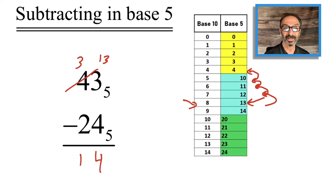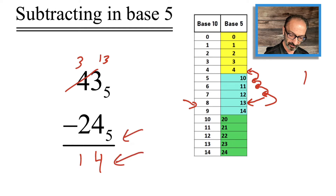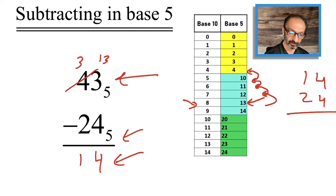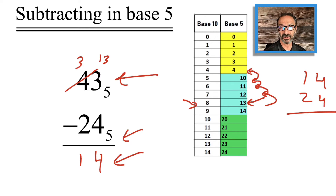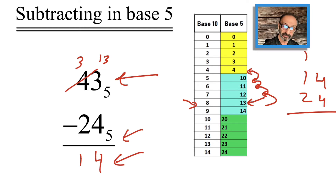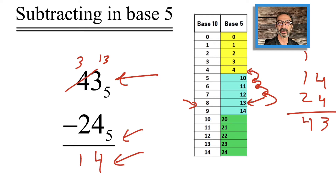You can always double-check by adding backwards. Adding 1 4 and 2 4: 4 plus 4 is 8, and 8 is 1 five and 3 units, so we carry the 1 five and write the 3 units. On the left I have 1 plus 1 plus 2, which is 4 — that's fine in base 5. So 4 3 is correct. Check!